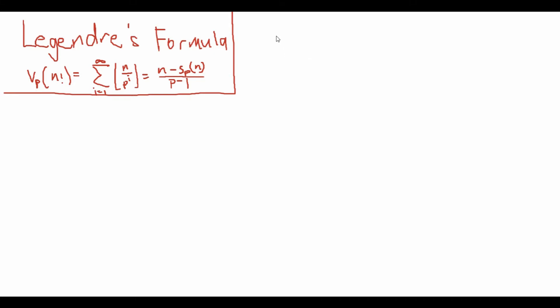So to do this, let's analyze n factorial. We know that it's just equal to n times n minus 1 times n minus 2 all the way to 2 times 1, right? So let's first see how many of these have one divisor of p. Well, it's simple. That's just the floor of n over p.